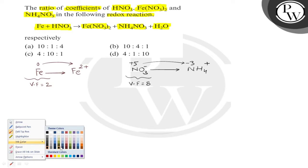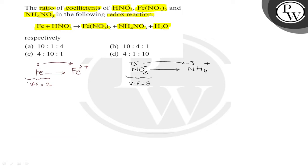So to balance, we need to multiply with 4 and 1 respectively. The reaction will be: 4 Fe plus 10 HNO3 turning to 4 Fe(NO3)2 plus NH4NO3 plus H2O.